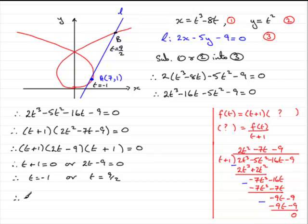But you should be able to say that, therefore, at b, t equals 9 over 2. And therefore, b has coordinates. And if you substitute, as I say, 9 over 2 into here, check it out on your calculator, you should find you get 441 over 8.